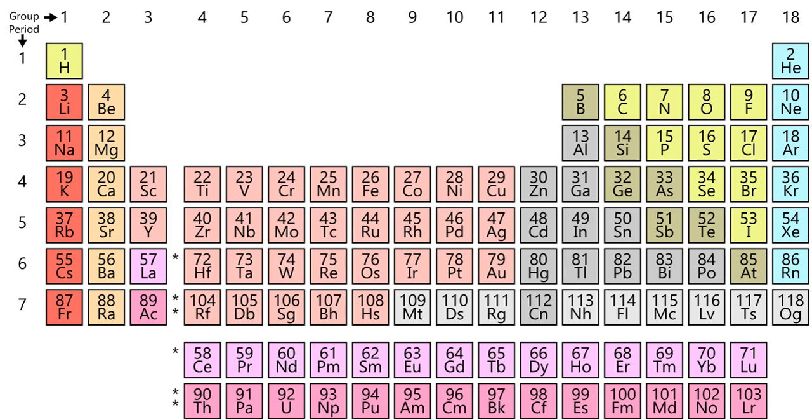There are three systems of group numbering. The modern numbering group 1 to group 18 is recommended by the International Union of Pure and Applied Chemistry. It replaces two older naming schemes that were mutually confusing.